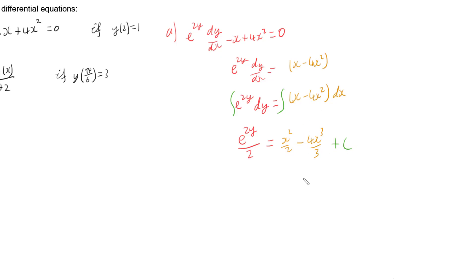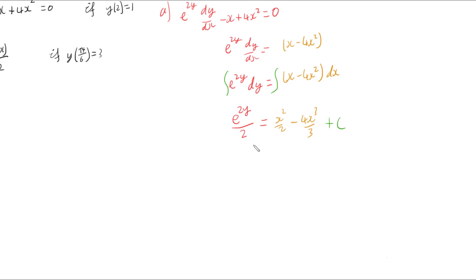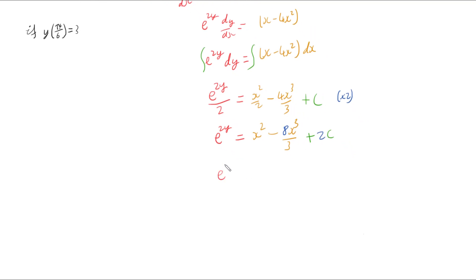Let's tidy this up. I've got two denominators of 2 so I'm going to multiply both sides by 2. That gives us e to the 2y equals x squared minus 8x cubed over 3 plus 2c. We can rewrite 2c as a new constant d, where d equals 2c, since a constant times a constant is just another constant.